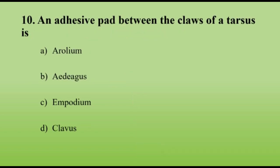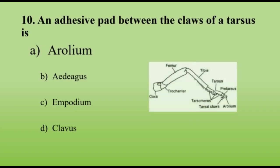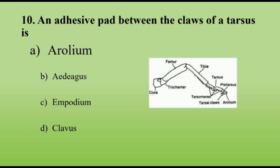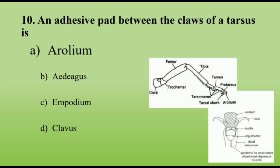An adhesive pad between the claws of a tarsus is the aroleum. The insect leg has the following parts: coxa, trochanter, femur, tibia, tarsus, and pretarsus. The pretarsus ends with two claws, and between the two claws there exists a median pad called the aroleum, which enables insects to walk on smooth surfaces without slipping.